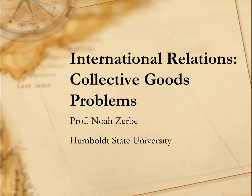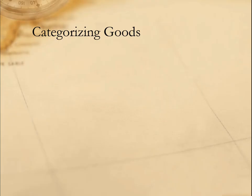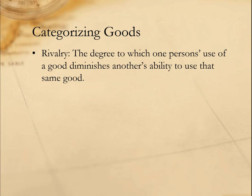So what are collective goods and why are they a problem? To understand collective goods, we have to understand the characteristics that define most of the things we produce and consume, namely rivalry and excludability. Rivalry refers to the degree to which one person's consumption of a good reduces someone else's ability to use or consume that same good at the same time. If my use of a good prevents or limits someone else's ability to use that good at the same time, then that good is said to be rivalrous. If it doesn't, then that good is said to be non-rivalrous.